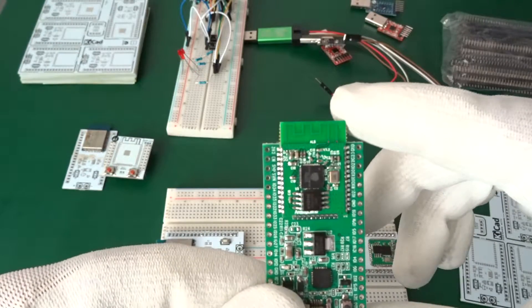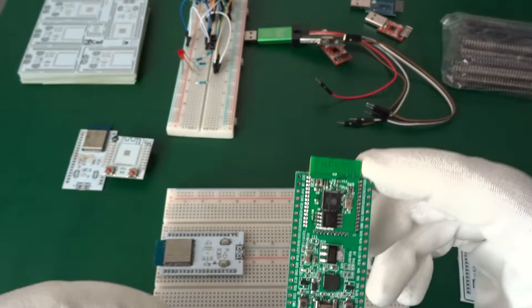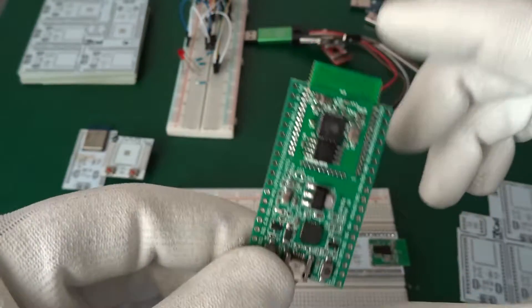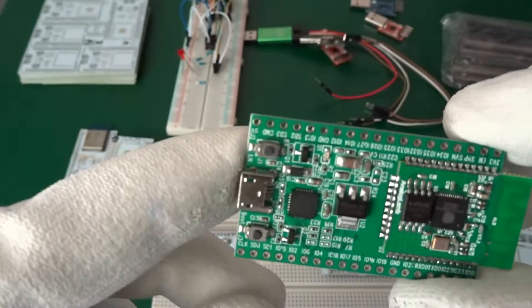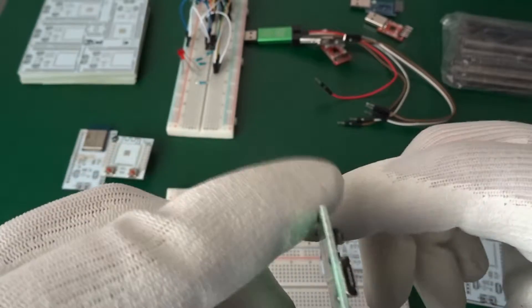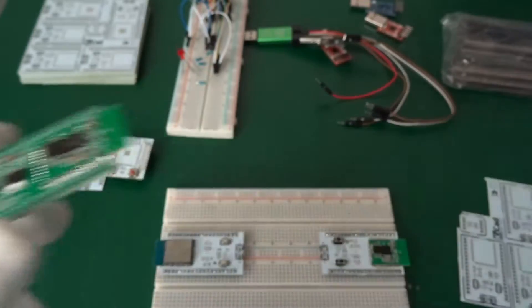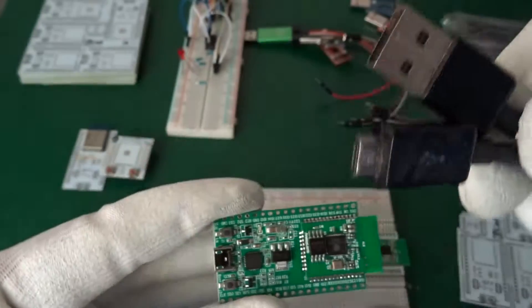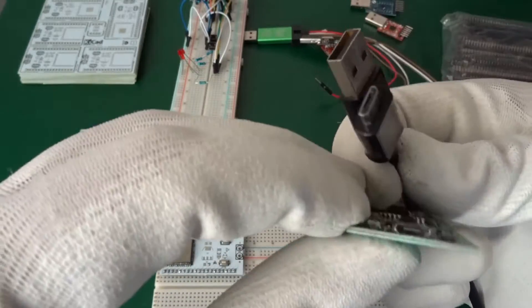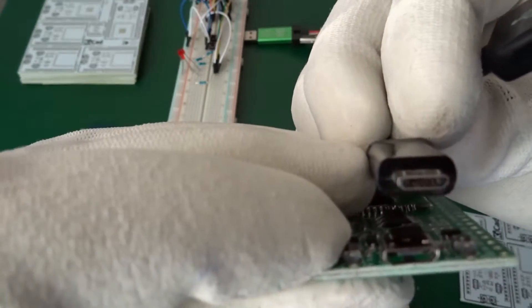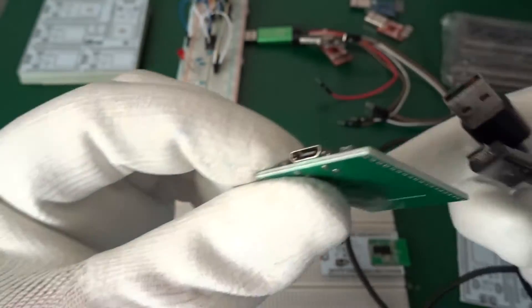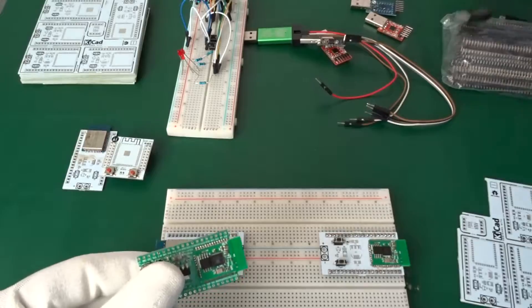And next we have an adapter with already the module soldered onto and also the voltage regulator included in this module. But to use this we need a USB mini cable not included in the adapter, and on one side we have the standard USB header and on the other side the USB mini to plug into the module.